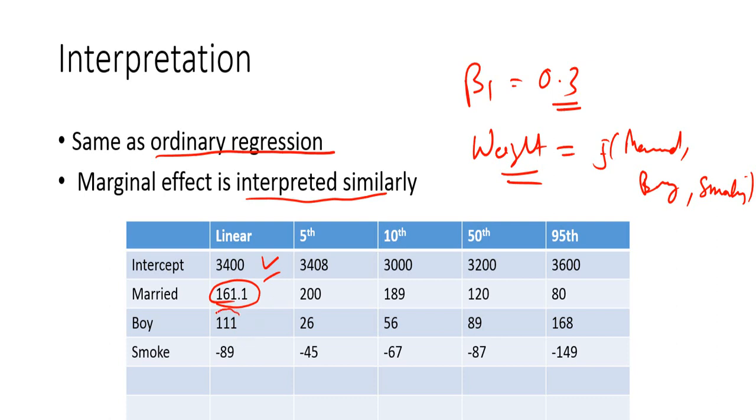Similarly, on average, if he is a boy, then the infant weight is 111 more than the girl. And if the mother is smoking, on average 89 units, it may not have been kg, 89 units less than if the mother is not smoking.